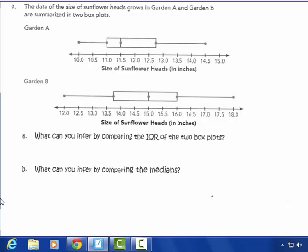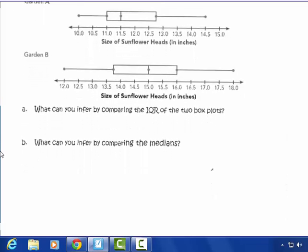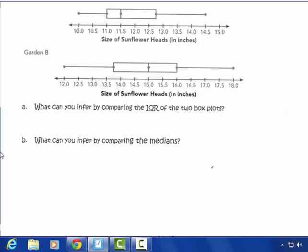Number 4. The data of the size of sunflower heads grown in Garden A and Garden B are summarized in these two box plots. So we're comparing the size of the gardens. And yes, if you've ever gone by a big field in the summertime, they have these signs that say Harris or some other manufacturer of seeds. And they actually do keep track of how well plants grow and where they come from to see if the seed that has been manufactured is doing its job. They do actually keep data like this. So what can you infer? What conclusion can you make by comparing the interquartile range of the two box plots?